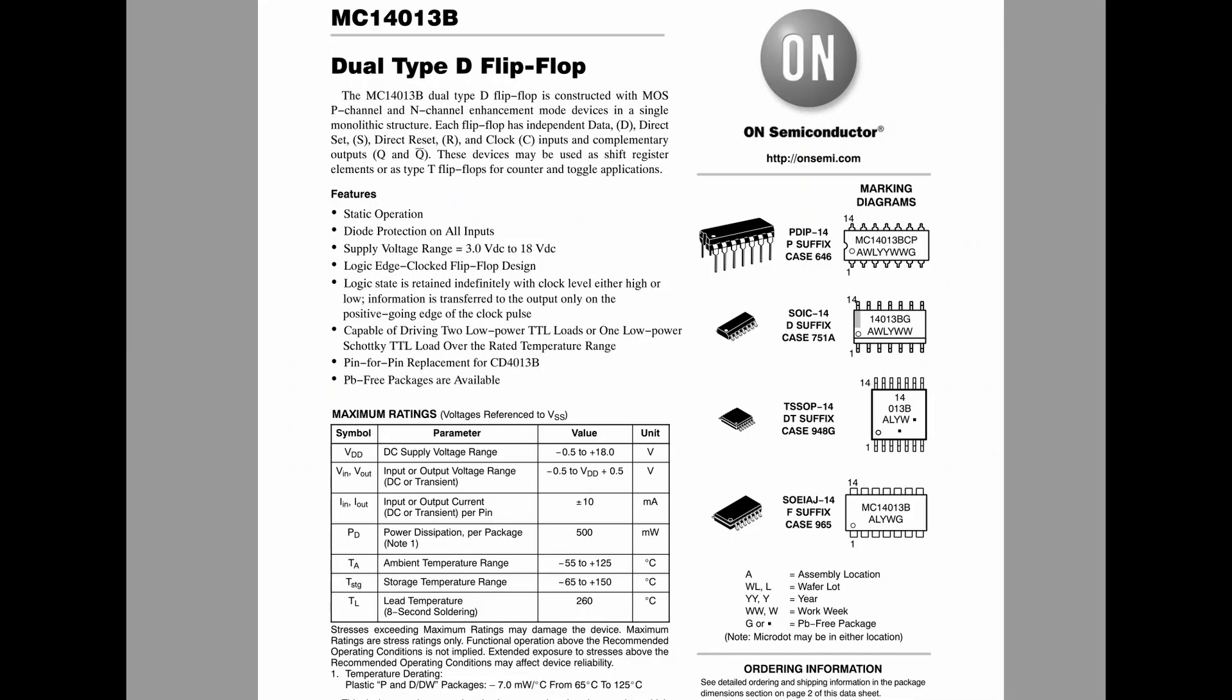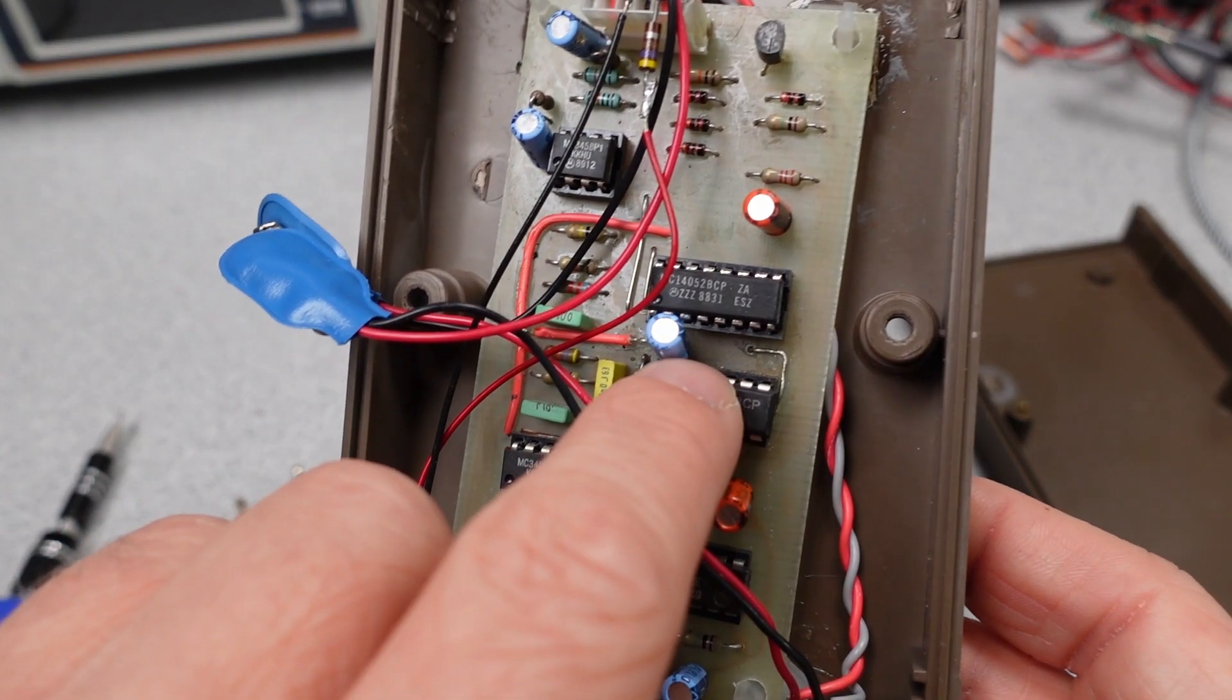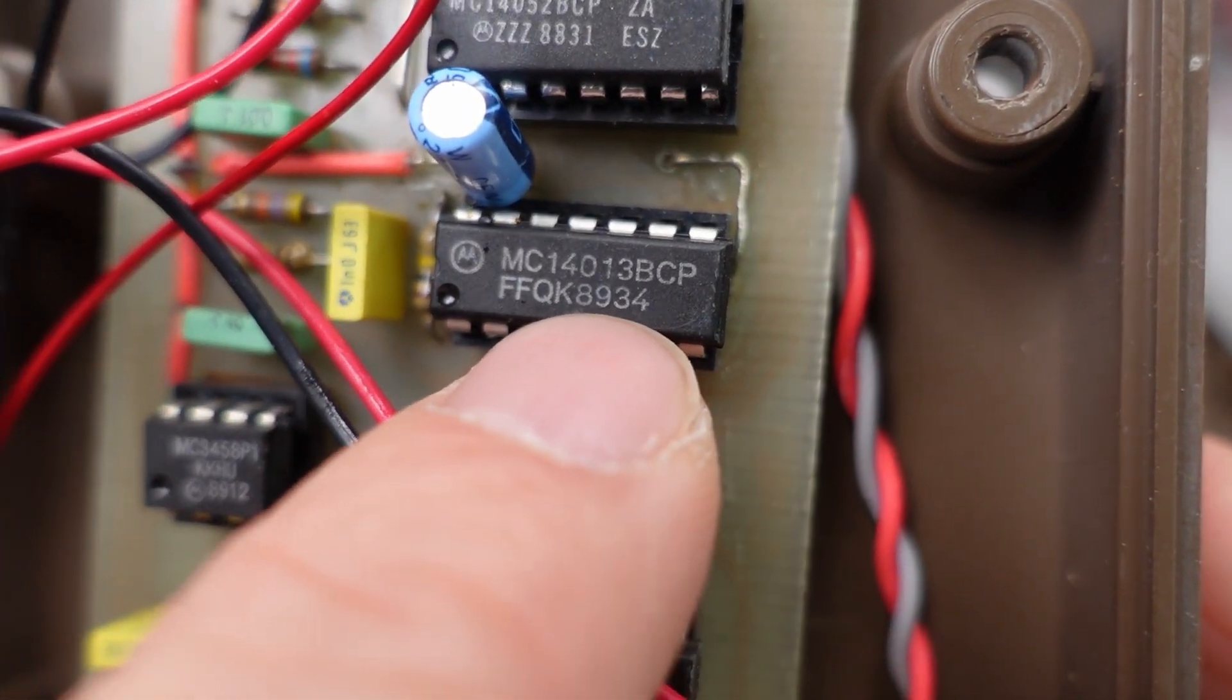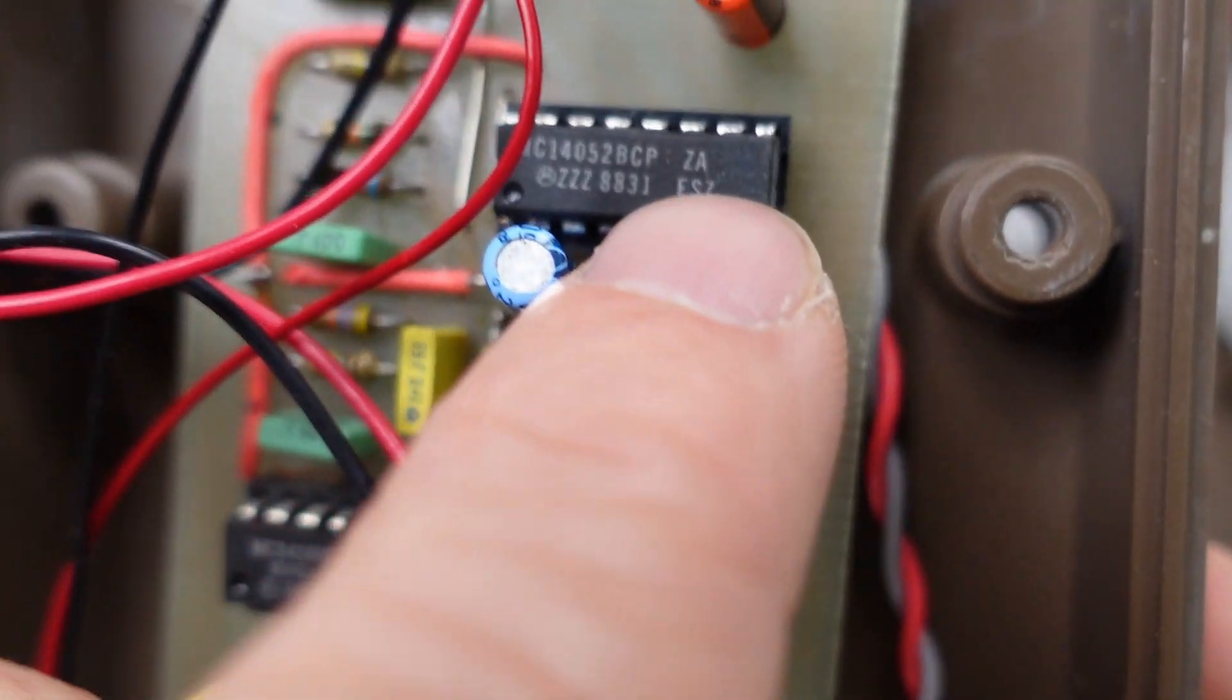Next chip on the board is the MC14013. This is a dual D-type flip-flop. This chip is serving two purposes. It is acting like an oscillator or a clock signal to keep things in some kind of time, as well as the source of the control signals for the next component.